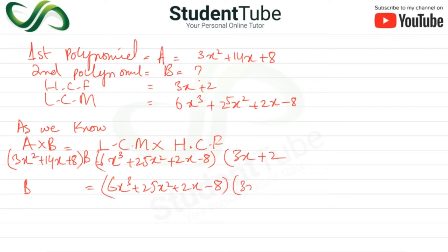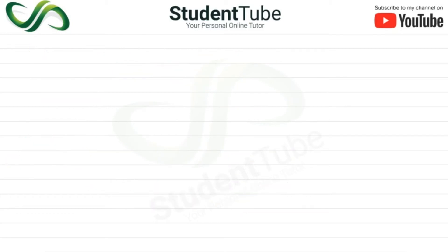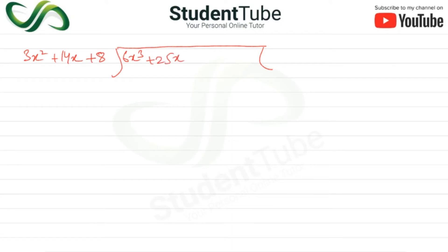Now we divide. We divide 6x³ + 25x² + 2x − 8 by 3x² + 14x + 8. Setting up the long division: 6x³ divided by 3x² gives 2x.